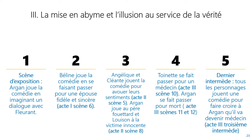Ainsi, dans la scène d'exposition, Argan joue la comédie en imaginant un dialogue avec son pharmacien Fleurant. Dans l'acte 1, scène 6, Béline joue la comédie en se faisant passer pour une épouse fidèle et sincère. Dans l'acte 2, scène 5, Cléante et Angélique jouent la comédie pour avouer leurs sentiments. Dans l'acte 2, scène 8, Louison et Argan jouent la comédie en parodiant une scène de tragédie. Dans l'acte 3, scène 3, Argan s'imaginant médecin, procureur, juge et bourreau de Molière, son propre créateur. Dans l'acte 3, scène 10, Toinette se fait passer pour un médecin auprès d'Argan. Et dans l'acte 3, scènes 11 et 12, Argan se fait passer pour mort afin de tester la loyauté et la sincérité d'Angélique et de Béline. Enfin, dans le dernier intermède, tous les personnages jouent la comédie pour faire croire à Argan qu'il va devenir médecin.